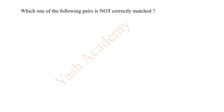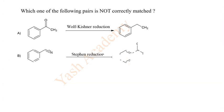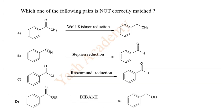Which one of the following pairs is not correctly matched? A: Wolf-Kishner reduction reaction, CO group is reduced to CH2, correct. B: Rosenmund reduction reaction, C≡C is reduced to CHO, correct. C: Rosenmund reduction reaction is given, COCl, Cl is replaced by H, so benzaldehyde is formed, correct. And here DIBAL-H is used. So D is not correctly matched.